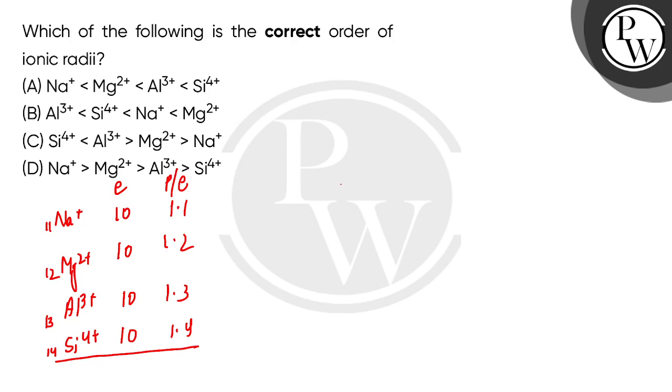Silicon 4 positive is smallest, then after that Al3 positive, then Mg2 positive, and the largest size is Na positive. So accordingly, option D is correct. I hope you understood, thank you.